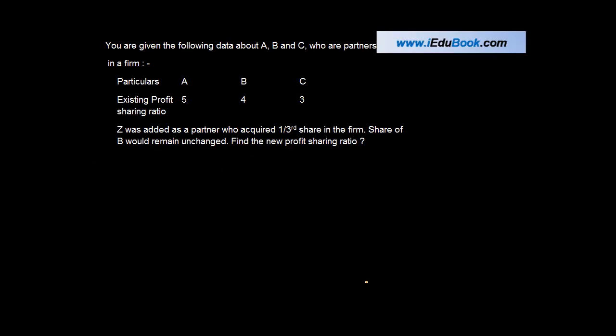You are given the following data about A, B, and C, who are partners in a firm. The particulars are that A, B, and C have an existing profit-sharing ratio of 5:4:3.